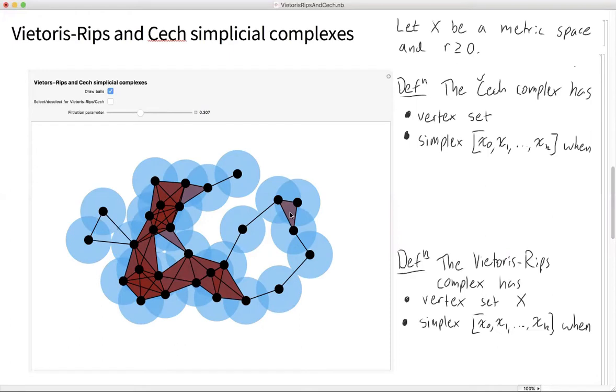We do have this triangle in the Čech complex because there is a point of triple intersection between those three balls. Okay, let's get into the math formulas.